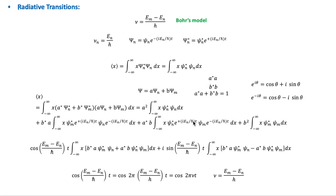If the electron is in quantum state N or M, the expectation value of position is constant and no electromagnetic radiation is emitted. But when the electron undergoes a transition between the two states N and M, the expectation value oscillates with frequency mu. The electron oscillates like an electric dipole and radiates electromagnetic waves of frequency mu equal to (EM minus EN) over H — the same result postulated by Bohr.